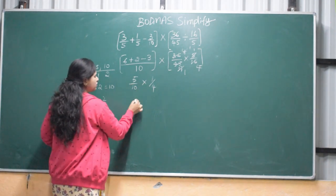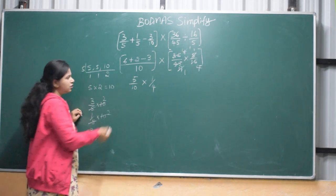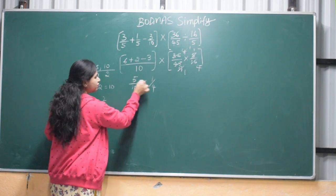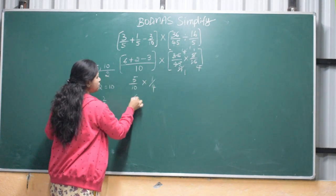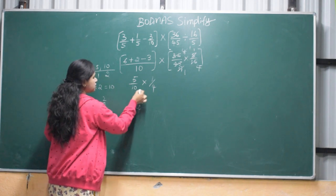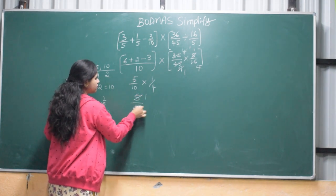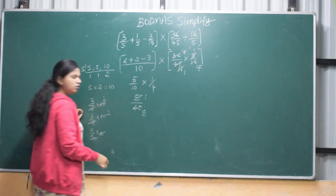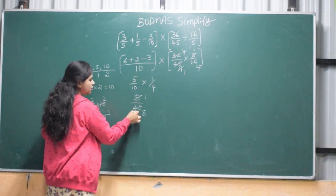We will add the multiplication. 5 into 1 is 5, 10 into 4 is 4, 5 by 40. Next level, 5 1s are 5, 8s are. This is also 5 1s are 5, 8s are.